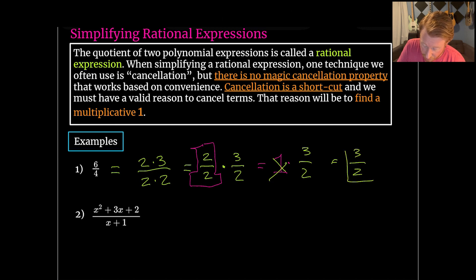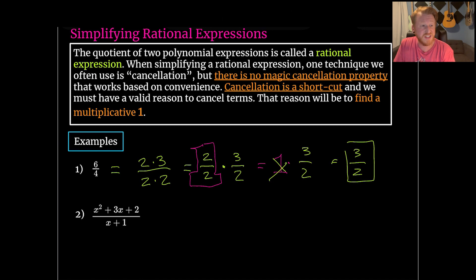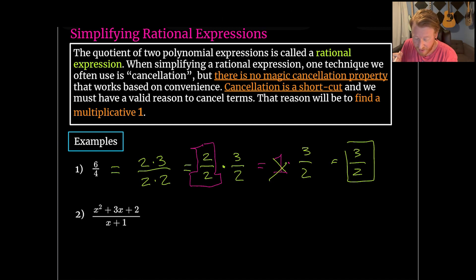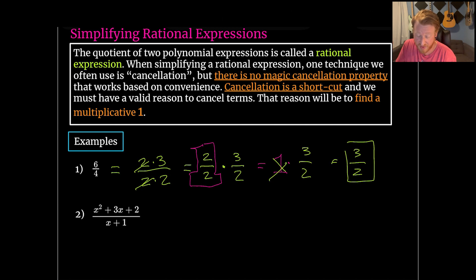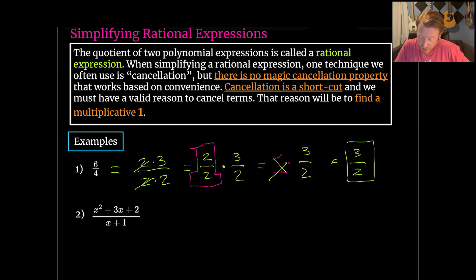This is the idea: we're trying to find some big dumb one, some convenient form of one. Then we cancel back at the beginning as a shortcut. In reality, what we're doing is finding this one, pulling it off. We don't need to multiply things by one — we can throw that in the garbage. That's what we are doing here.